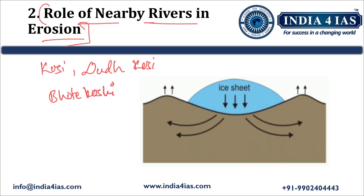This process is called isostatic rebound. Because the earth's crust experiences a lower load in response to erosion, the earth's crust can rise to maintain equilibrium, contributing to the overall elevation of the region. As material is eroded, that part of the earth becomes lighter, causing a rebound in the earth's crust. While erosion by rivers counteracts uplift by removing material, it also helps reveal newer, higher layers of rock that continue to rise due to tectonic forces.